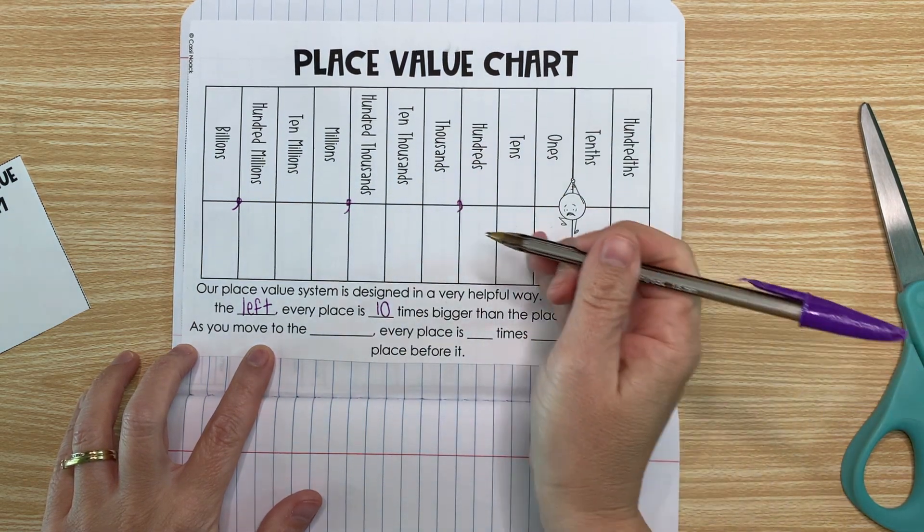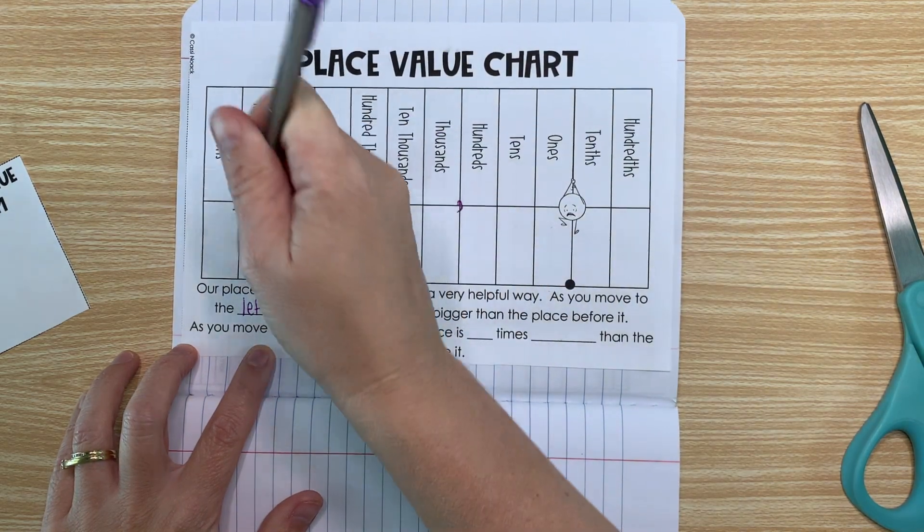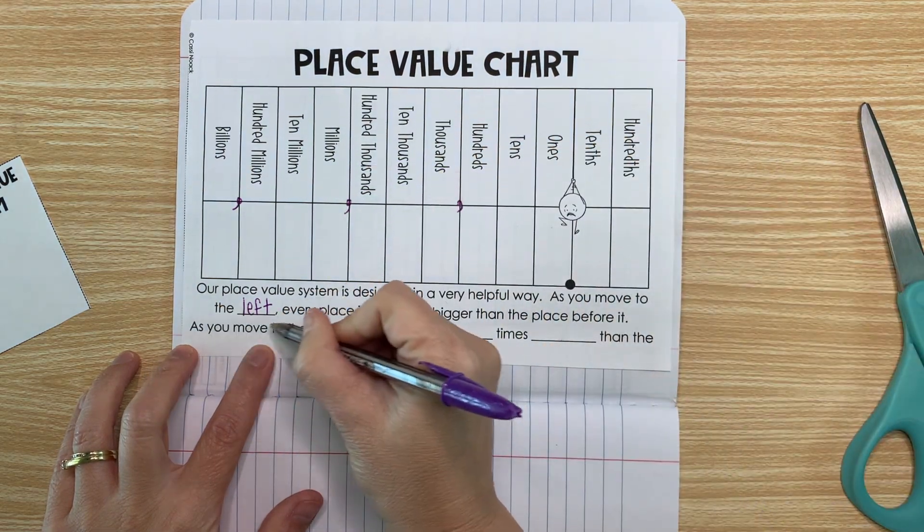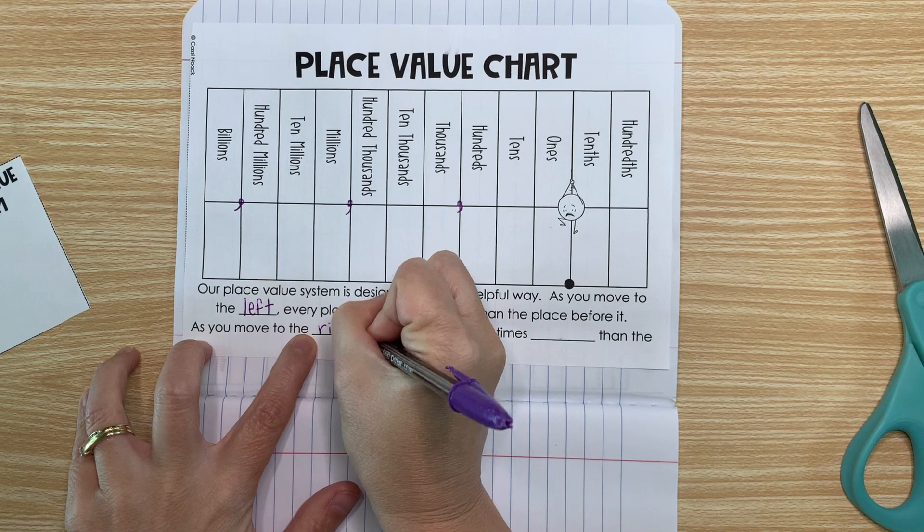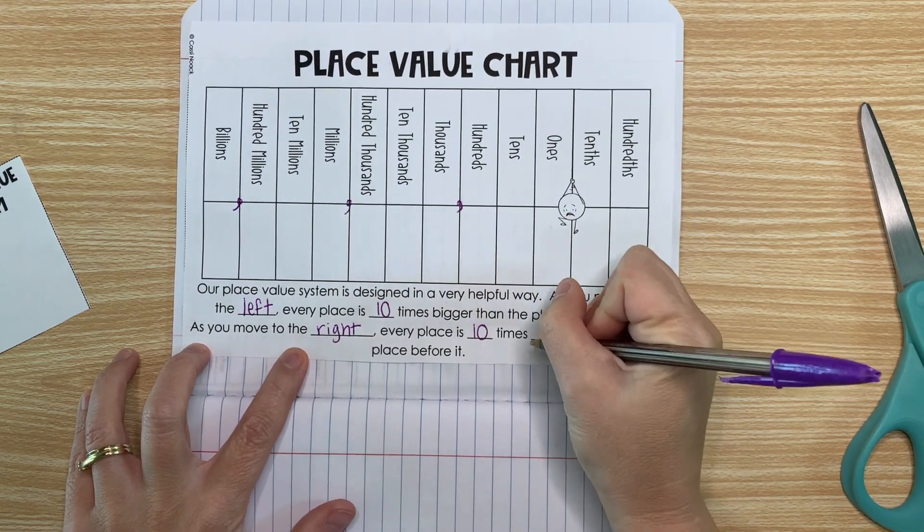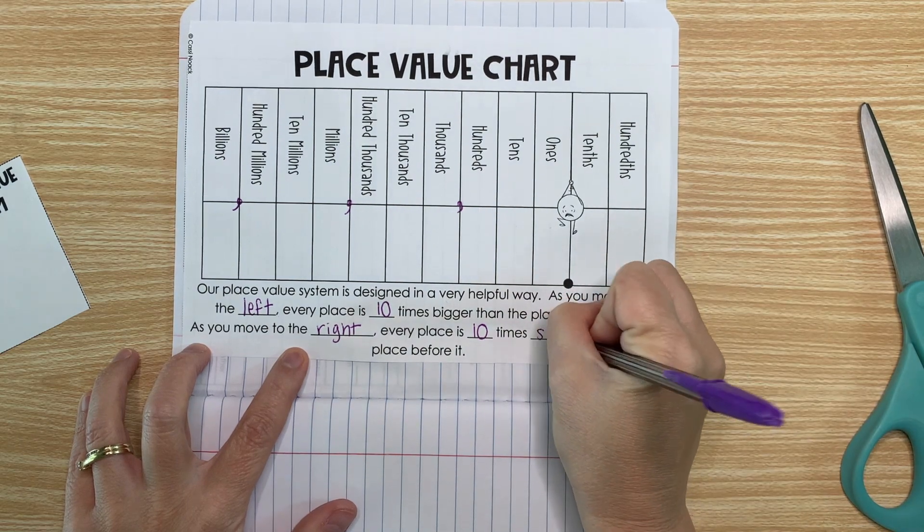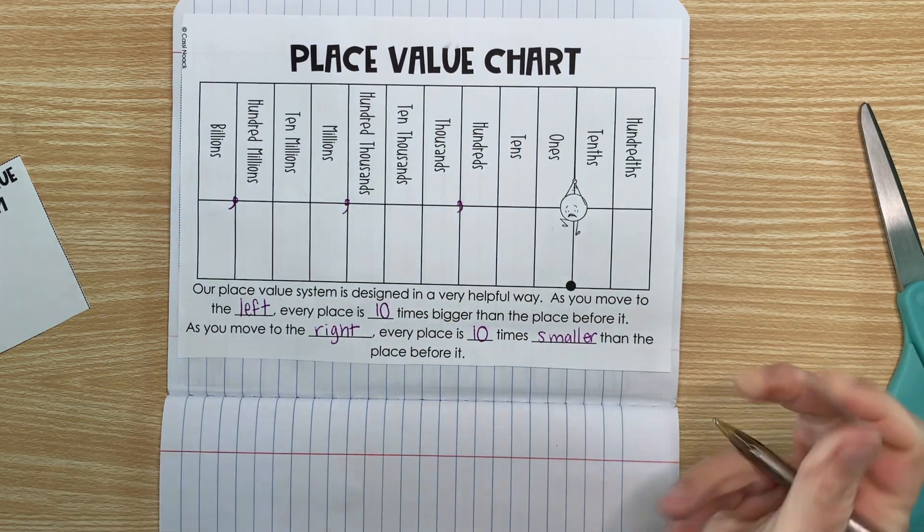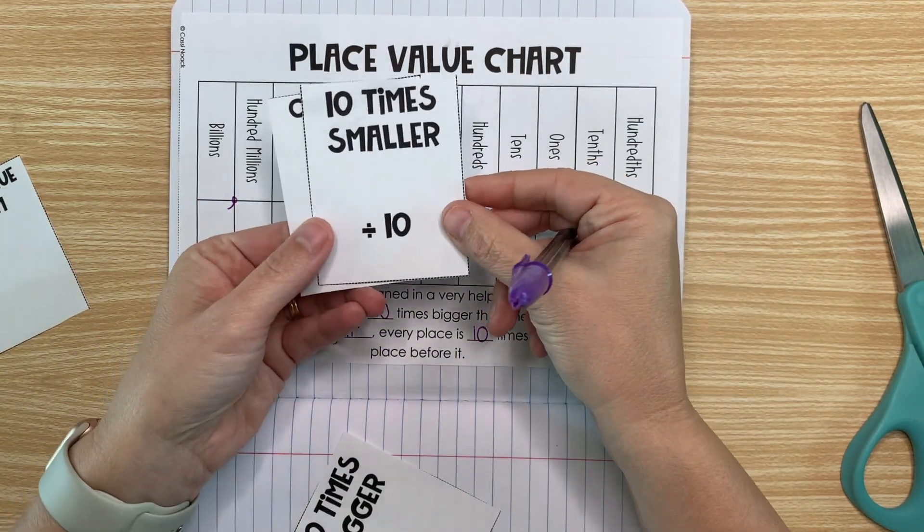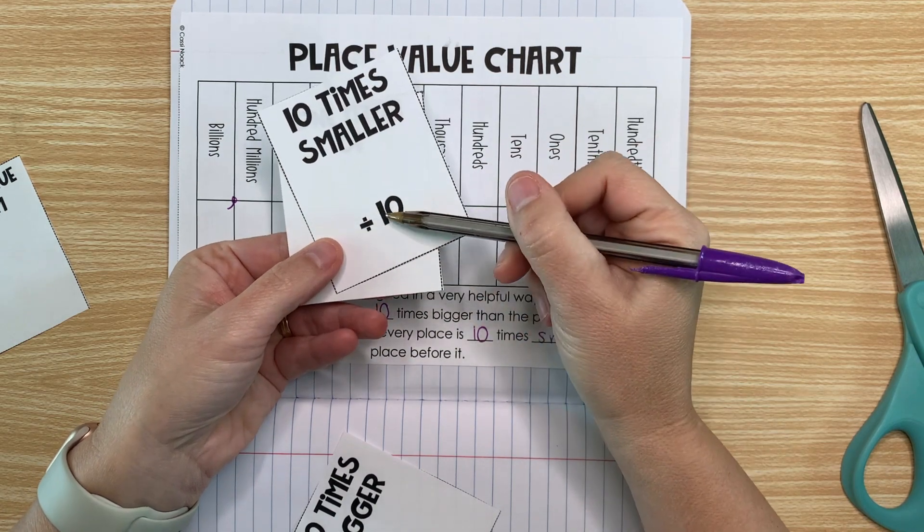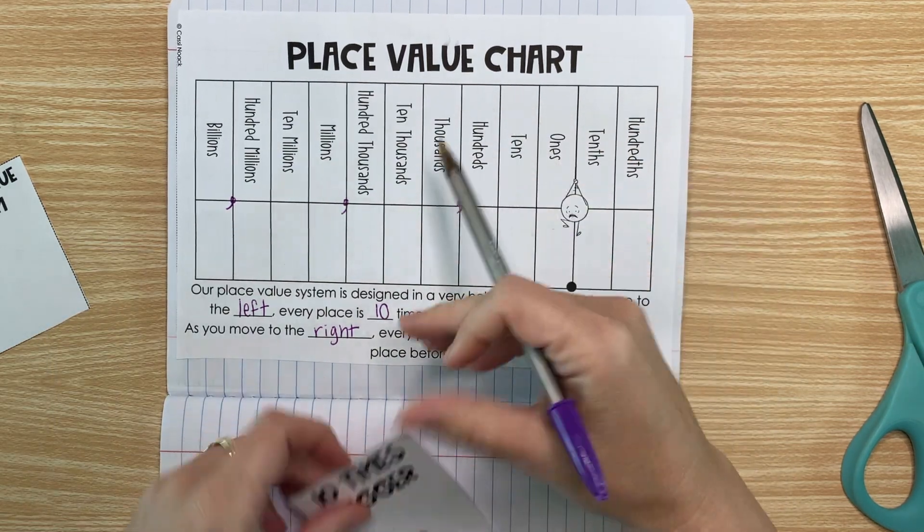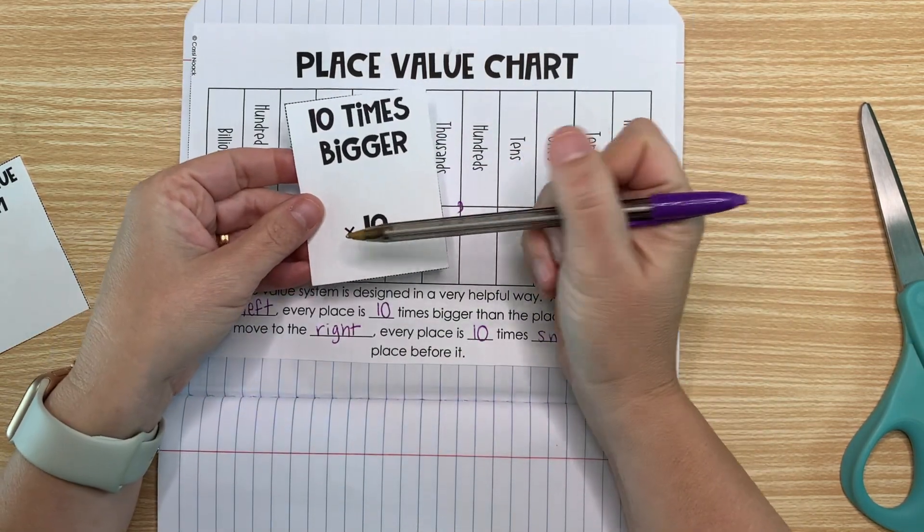So if every place to the left gets 10 times bigger, what do you think happens to every place to the right? Well, as you move to the right, every place is 10 times smaller than the place before it. And that's why we were talking a minute ago about 10 times smaller. And 10 times smaller is just another way of saying divided by 10 or 1 tenth of. 10 times bigger is just another way of saying multiplying by 10.